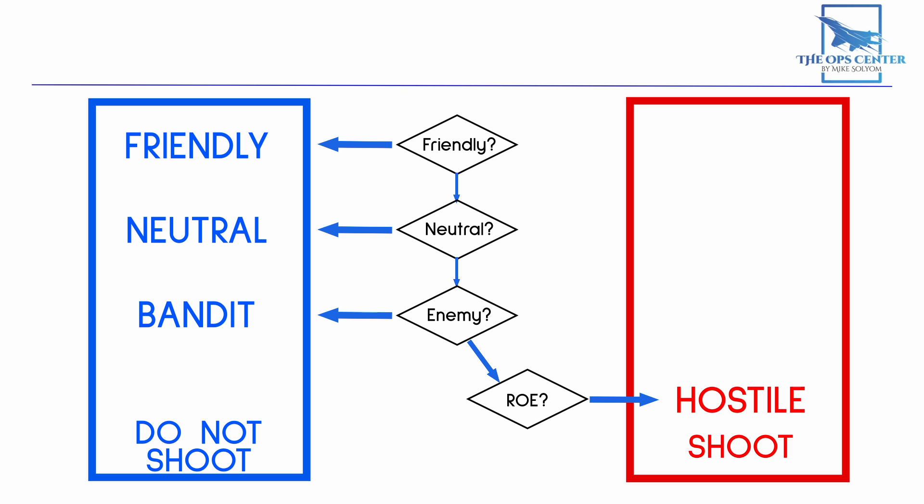Now let's say after going through the entire list of questions, you still can't fit a contact into a category. In that case, it would be marked as a bogey. When you get here, it means all beyond visual range means of ID have failed. The only option left is an intercept for a VID. Which is why intercepts are still so important even in the age of beyond visual range combat.